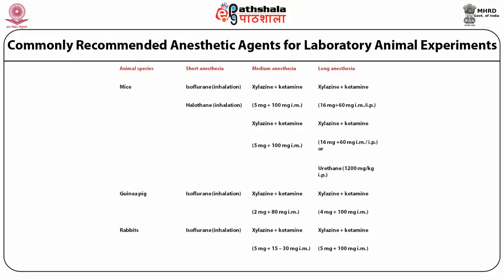A table showing anesthetics commonly used for laboratory animal experiments: for inhalation anesthesia, isoflurane is used; for drug-based anesthesia, xylazine and ketamine are commonly used in mice, rats, rabbits, and guinea pigs. Ketamine is a good anesthetic and xylazine is a muscle relaxant. Inhalation anesthesia has faster recovery; ketamine-xylazine has slower recovery. The choice of anesthesia depends on the study, as some agents may interfere with results.